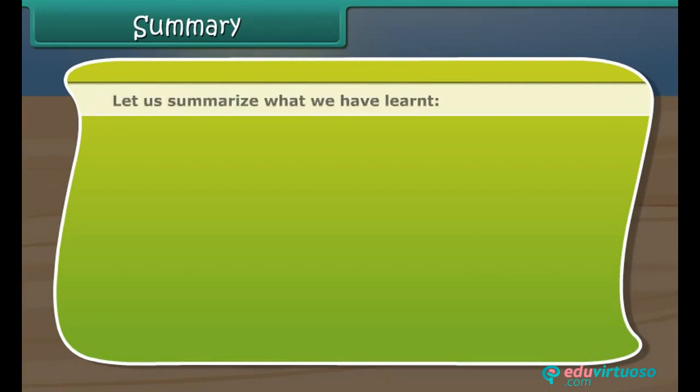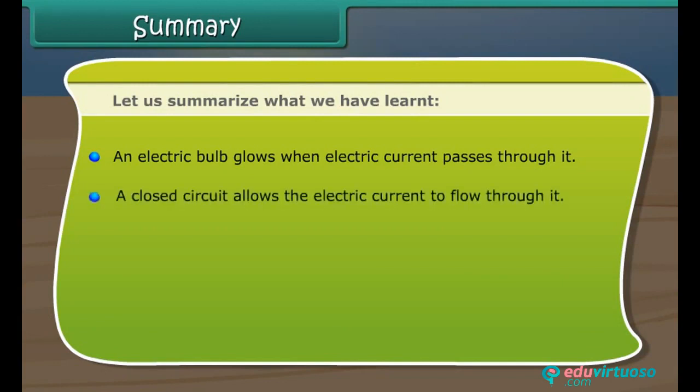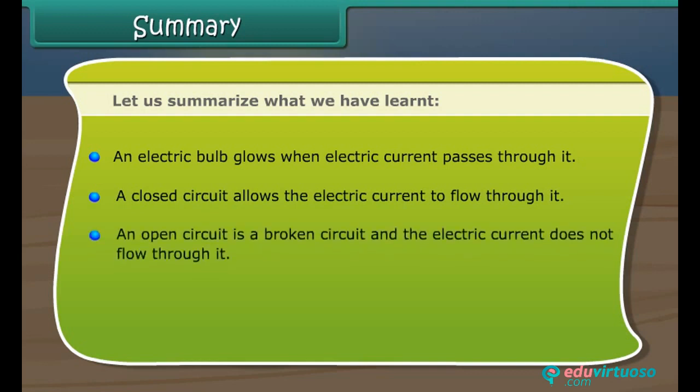Let us summarize what we have learned. An electric bulb glows when electric current passes through it. A closed circuit allows the electric current to flow through it. An open circuit is a broken circuit and the electric current does not flow through it.